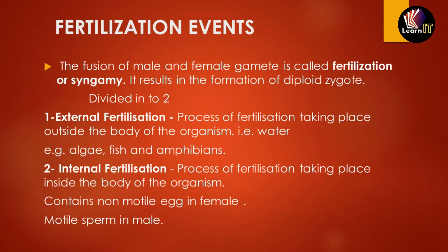Fertilization results in the formation of a diploid zygote. Two haploid gametes fuse — one plus one equals two — forming the diploid zygote. This fertilization event is divided into two parts: external fertilization and internal fertilization.